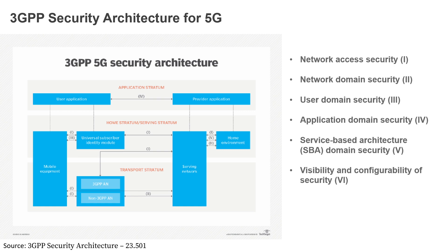User domain security means what measures have been taken on the UE side — for example, using the SUPI encryption into SUCI using Profile A. Application domain security is about how you maintain security in your application stratum between the user application and the providing application, and how you protect information at the application layer. SBA domain security is about the service-based architecture — AMF, SMF — how you maintain security, whether you're using TLS, HTTPS, or a PKI to generate certificates.